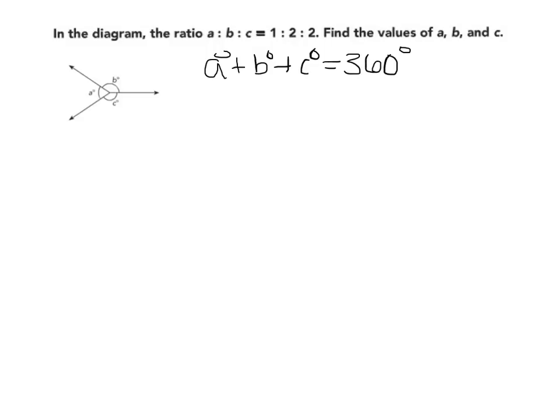Because of my ratio, I have for every one unit of A, I'm going to have two units of B and two units of C. And all these together have to equal 360 degrees. So I have to count and see how many total units I have: 1, 2, 3, 4, 5.